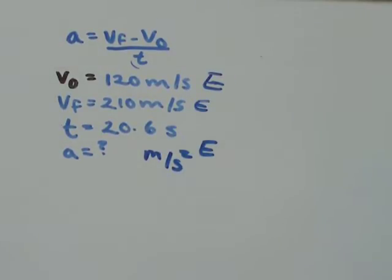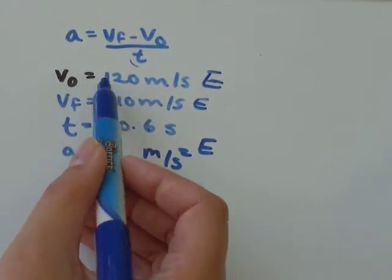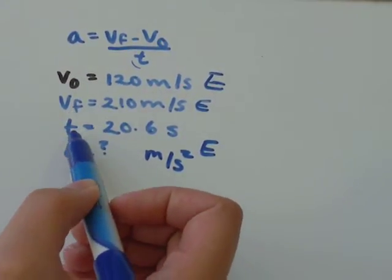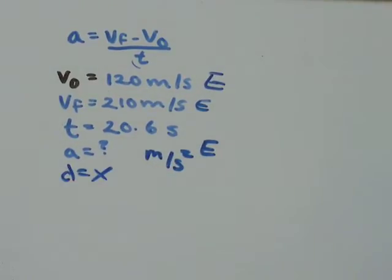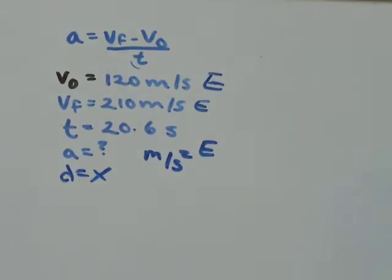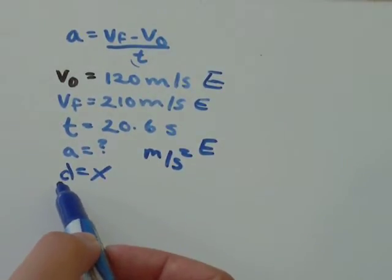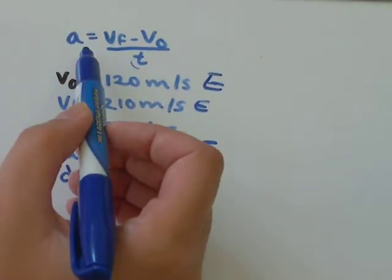I think it's a good idea to always write down the notation for what you have. Write down V₀ if you have it. We don't have distance in this question, so we need to pick a formula that doesn't involve displacement. That's why we choose this one.